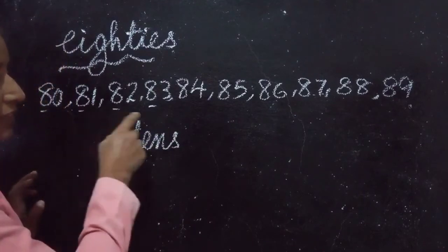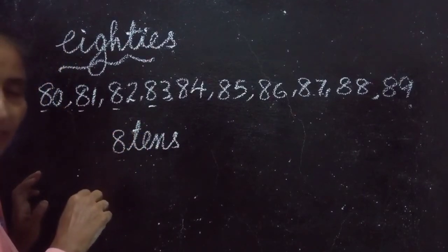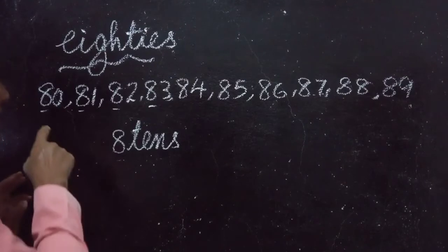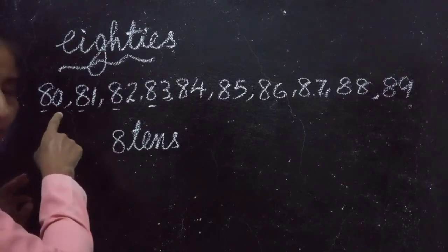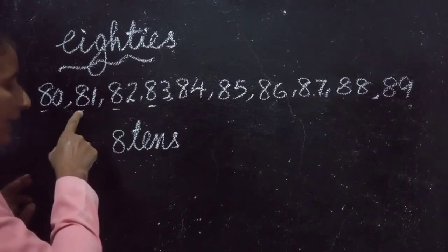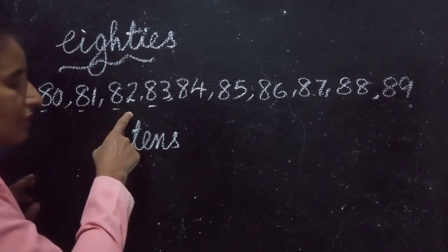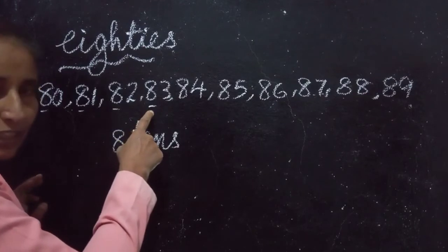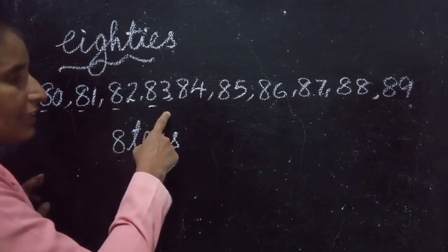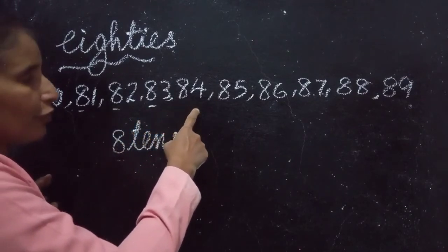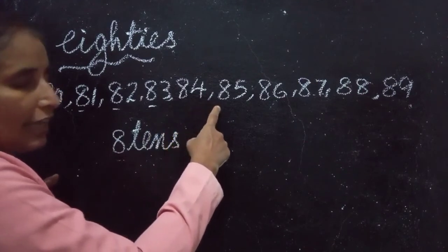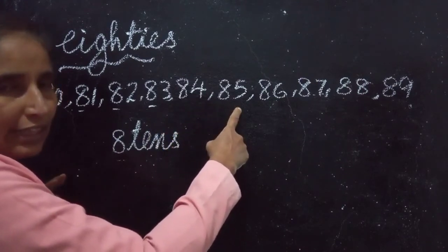So how you will say the expanded form of this tens and ones of a number? 8 tens and 0 ones is 80. 8 tens and 1 ones is 81. 8 tens and 2 ones are 82. 8 tens and 3 ones are 83. 8 tens and 4 ones are 84. 8 tens and 5 ones are 85.